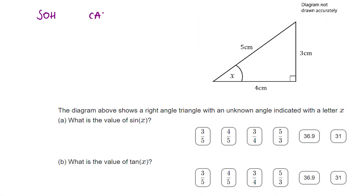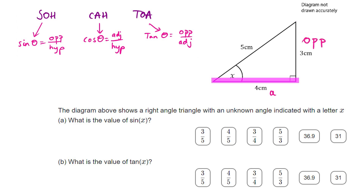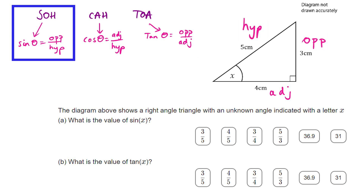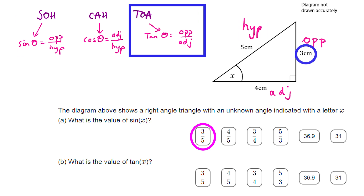The first thing to do with exact trig value questions is to use our knowledge of SOHCAHTOA to understand how we can find the sine of an angle given the lengths. With angle x indicated on the triangle, this length is the opposite, this is the adjacent, and the five-centimeter side is the hypotenuse. SOHCAHTOA reminds us that sine of the angle equals the opposite over the hypotenuse — so sine x is three over five. The tan of x equals the opposite over the adjacent, which is three over four.